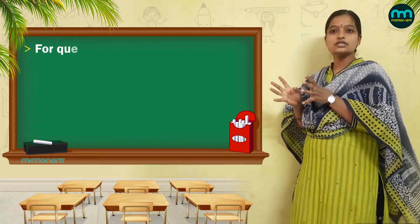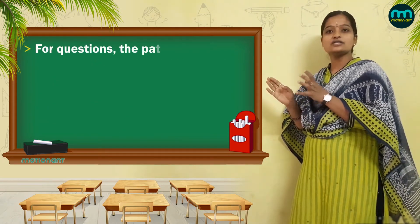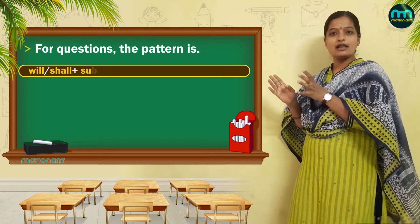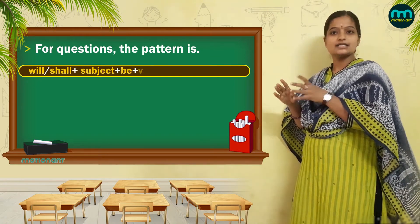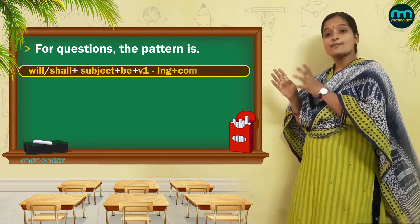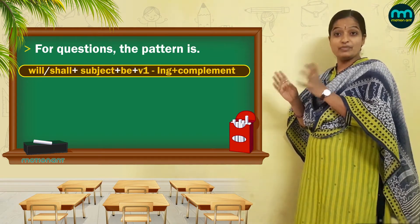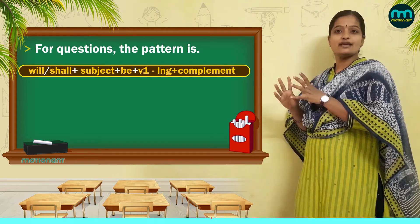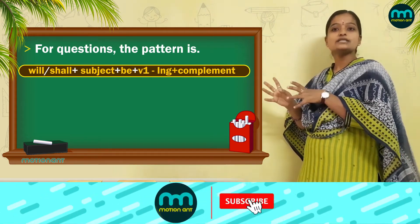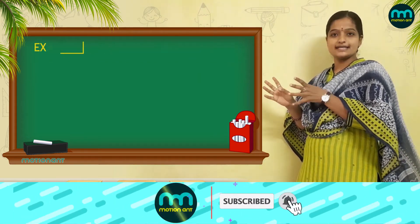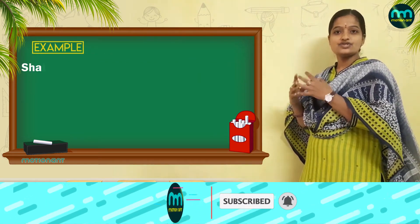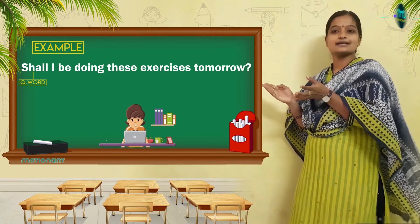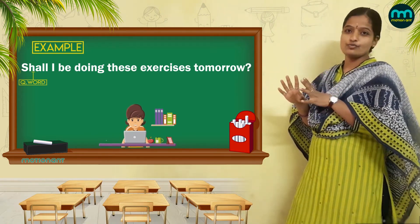For questions, the pattern is: Will or shall plus subject plus be plus the V1 form with -ing added plus complement. Example: Shall I be doing these exercises tomorrow?